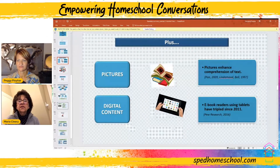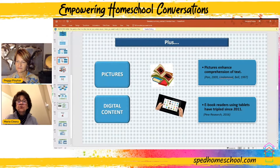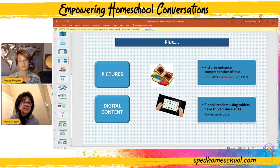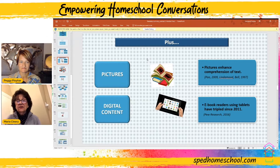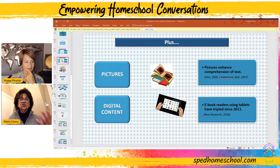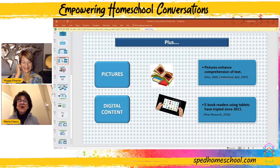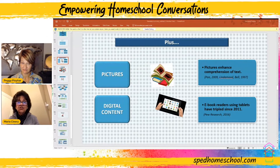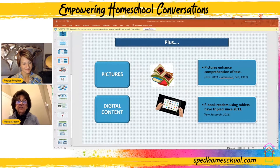We want to make sure the stories have pictures, and if possible, have digital content, because this is very appealing to reluctant readers. As a homeschooling teacher, you can do this easily — while preparing a story, grab pictures that match it from the internet. As you read a paragraph, hold the picture up or keep your screen on your iPad or laptop next to you to show your children what you're reading.